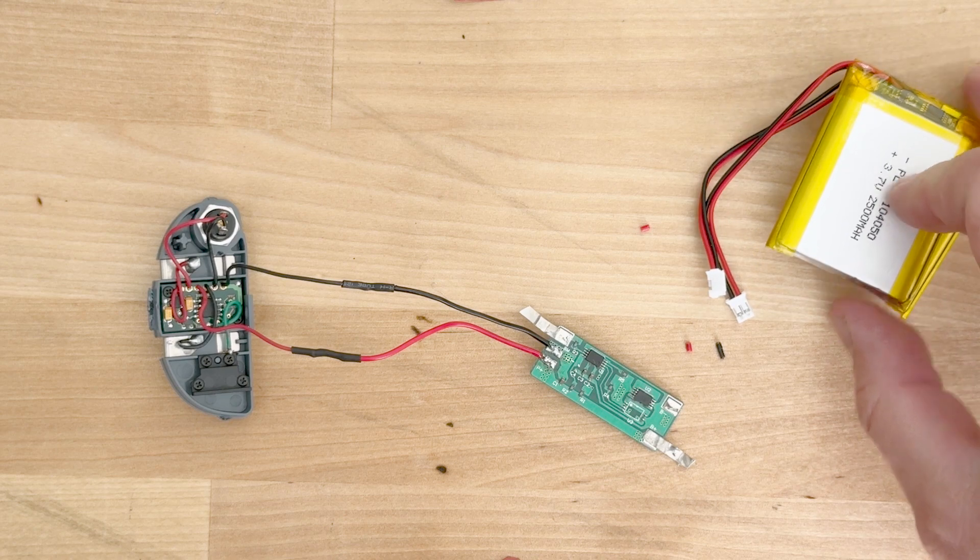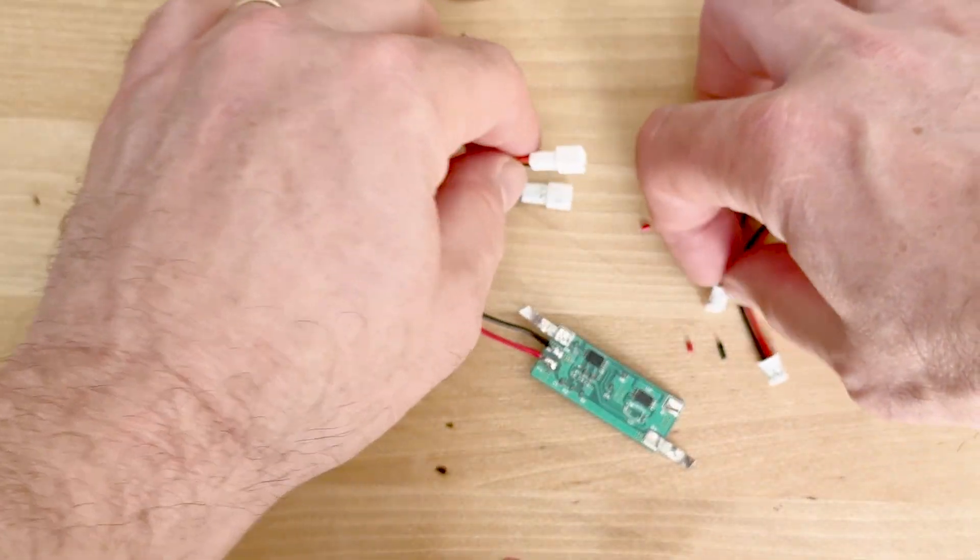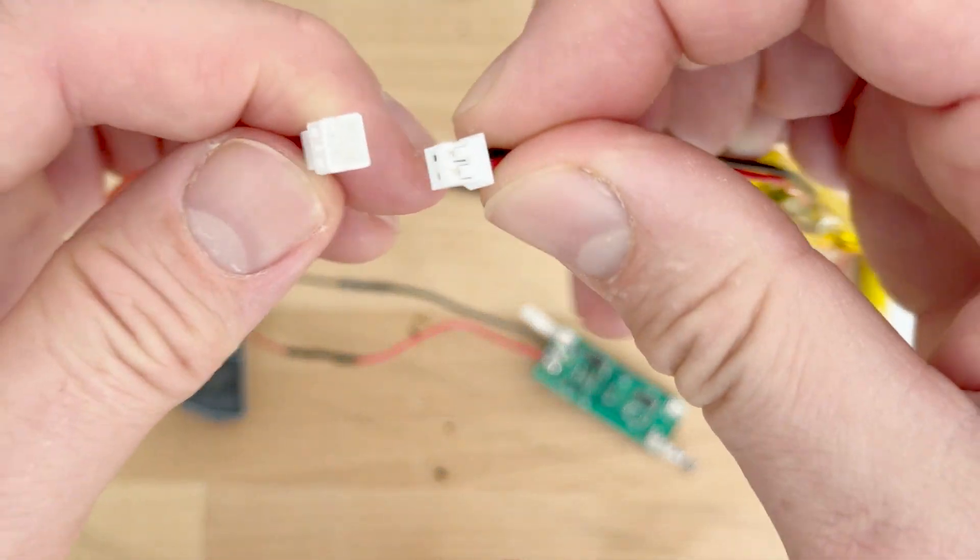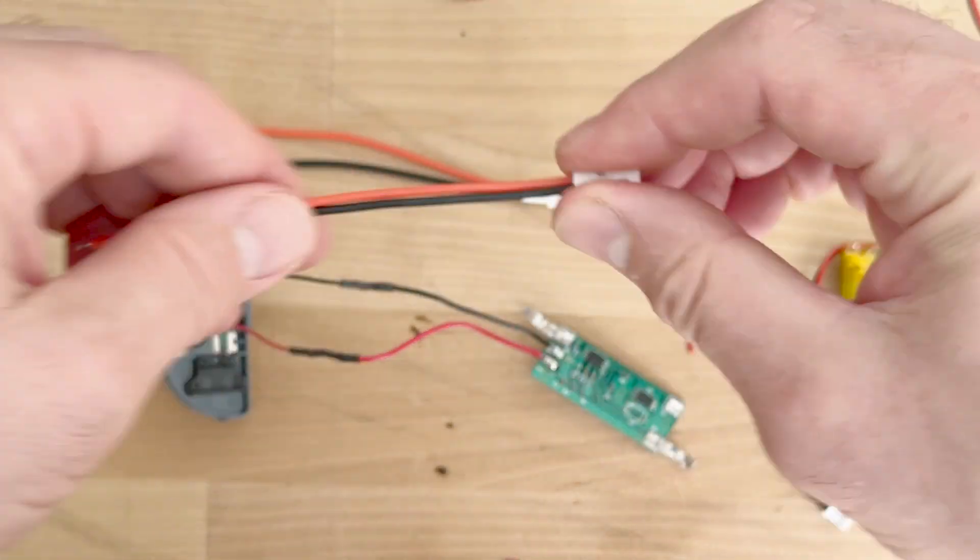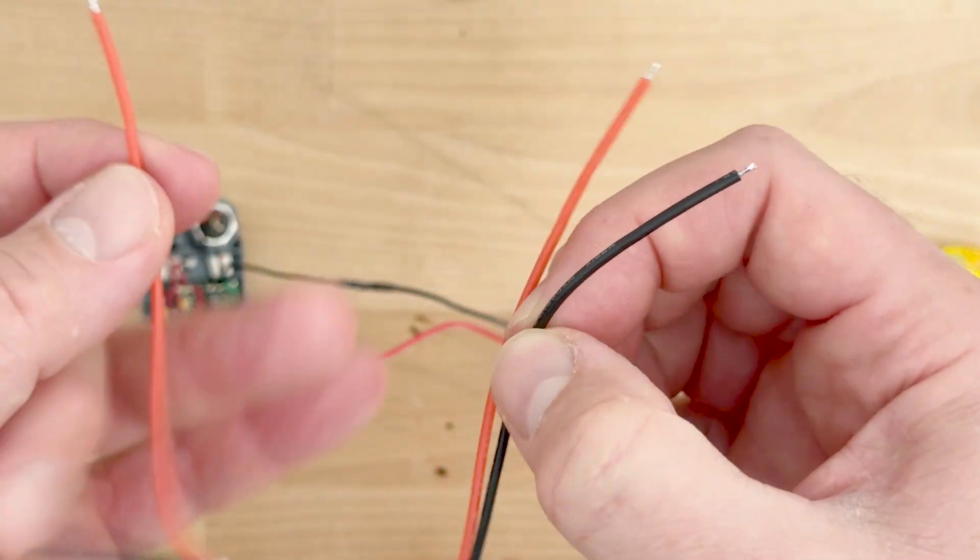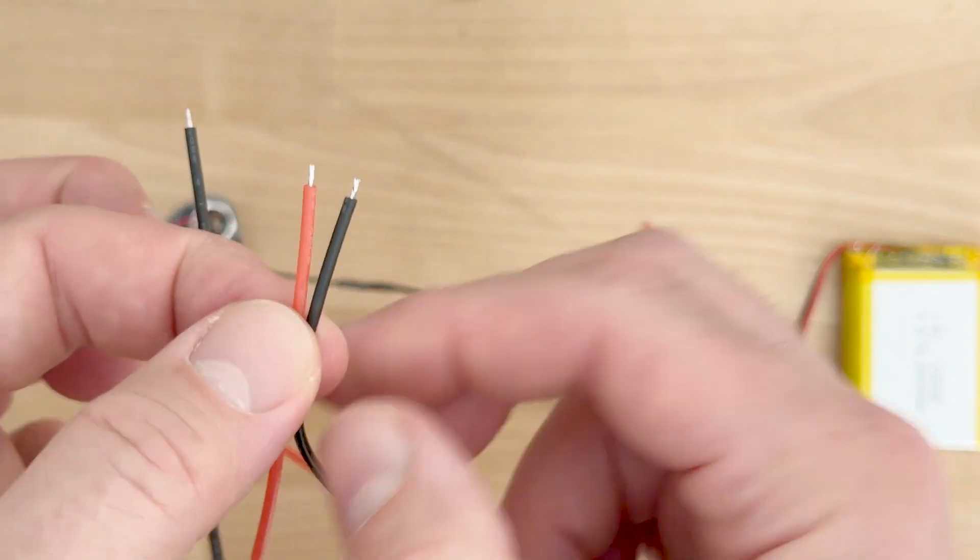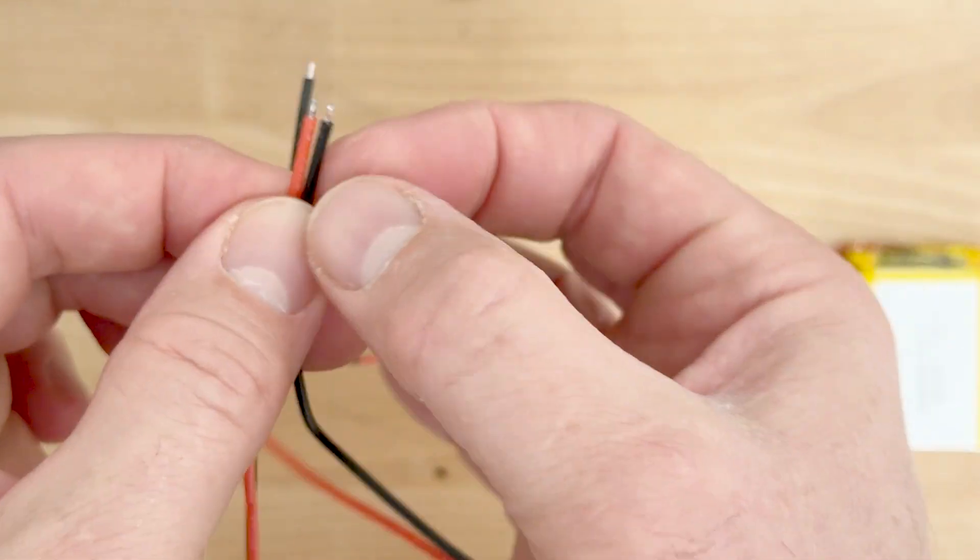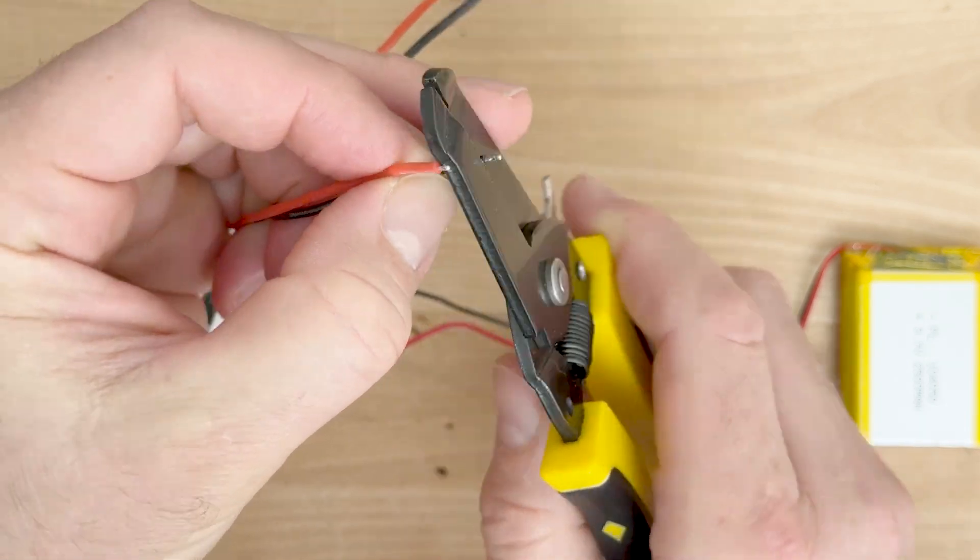So here are our new batteries and we're going to use those connectors that we can add with those new connectors that we bought. So we can connect the batteries to the board and years down the line if you need to replace the batteries again, it now makes it super easy. Just undo the connectors, put a new battery on, put everything back together and you're done. So no soldering, nothing will be needed in the future.